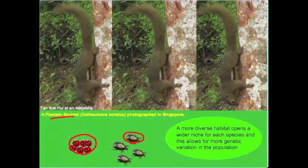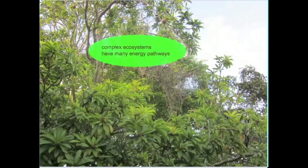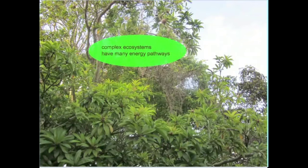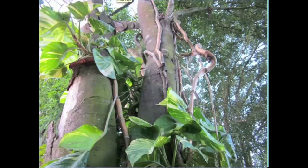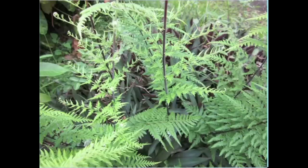Diverse and complex habitats or ecosystems also have many energy pathways. As this picture shows, the emergent layer at the top of the forest — those trees projecting above the thick canopy — provides the first layer of productivity. But there are several areas where energy can enter: the areas lower down are also capable of generating some productivity, making use of whatever light penetrates through the canopy, and we also have plants on the forest floor bringing energy into the system.